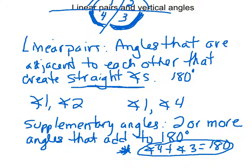Alright, so that's linear pairs. They're just angles that are sitting next to each other that create a straight angle. That's basically it. Let's talk about vertical angles. Let me scroll up here.